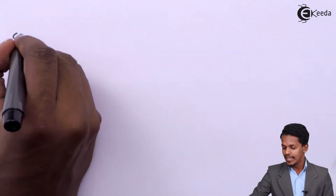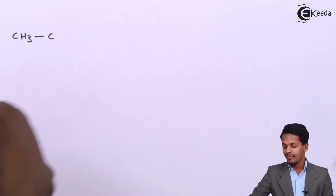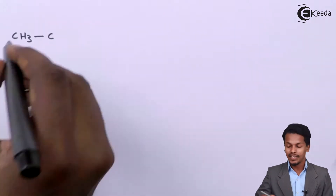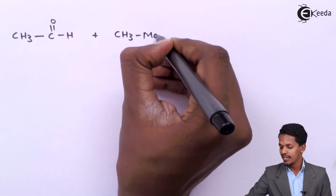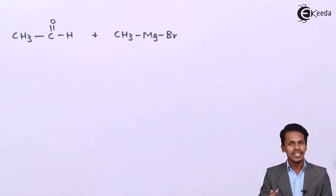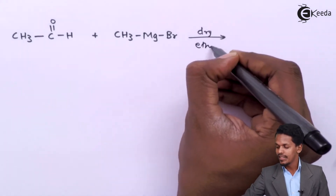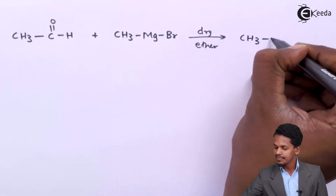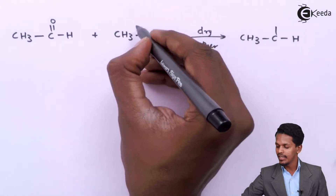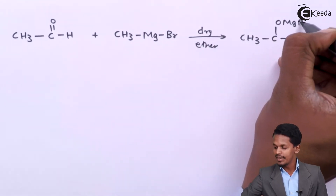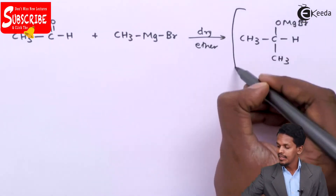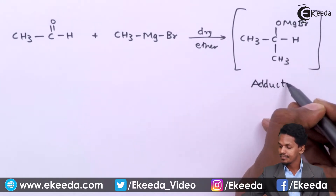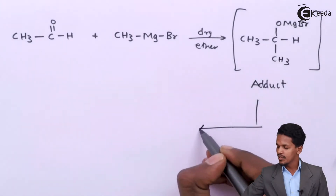Now let's look at what happens when a different aldehyde is used — specifically, the action of Grignard reagent on acetaldehyde (CH3CHO) reacting with methyl magnesium bromide (CH3MgBr). The reaction is similar to the previous one: in the presence of dry ether, an adduct is formed where MgBr attaches to the oxygen and CH3 attaches to the carbon.